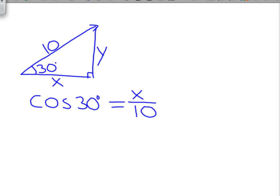Now, we just plug in cosine of 30 degrees into our calculator, and we get about 0.87. And then we just simply multiply both sides by 10, so 10 times 0.87.